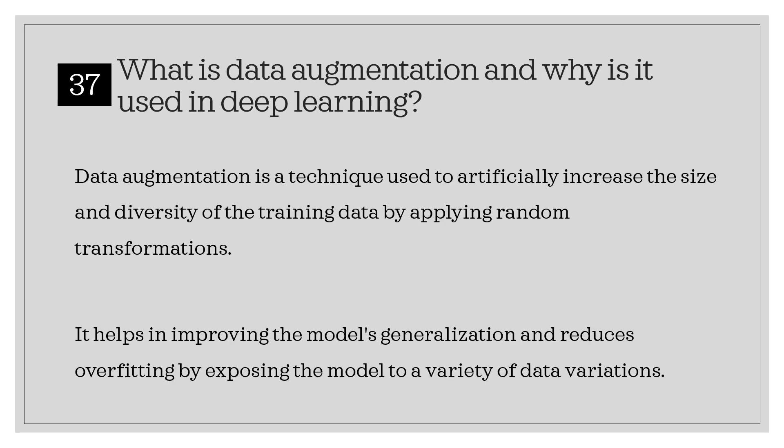What is data augmentation and why is it used in deep learning? Data augmentation is a technique used to artificially increase the size and diversity of the training data by applying random transformations. It helps in improving the model's generalization and reduces overfitting by exposing the model to a variety of data variations.